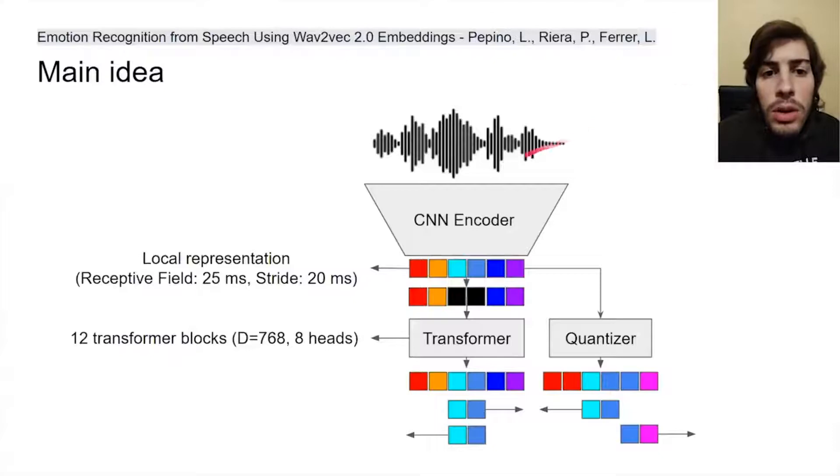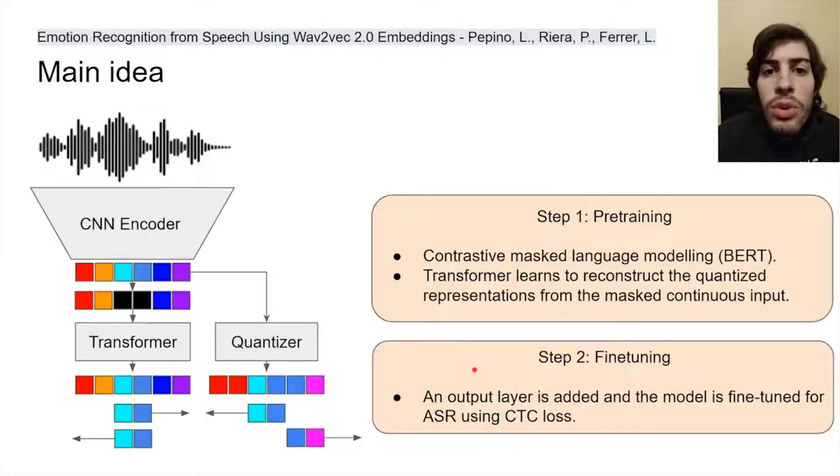The Wav2Vec2 model consists of an encoder which compresses the raw audio into a sequence of vectors. Then, this sequence is masked at some time steps, and a transformer has to reconstruct a quantized version of the original vectors. And that's the pre-training task, which is called Contrastive Masked Language Modeling.